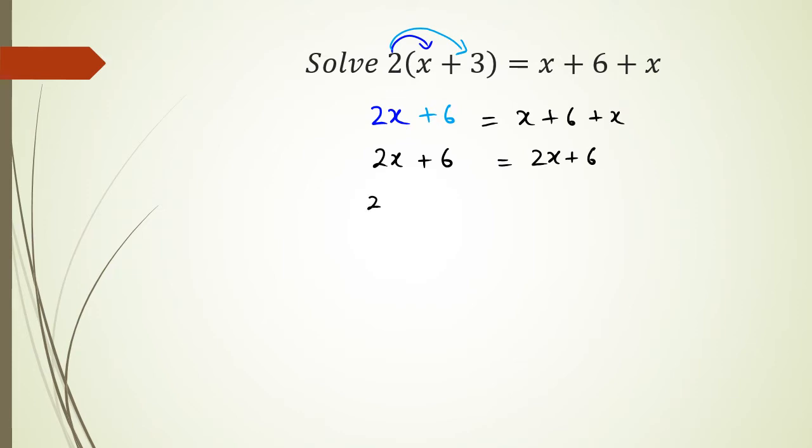So that means I have 2x plus 6 and shifting this 2x to the left hand side I'm going to get minus 2x. That equals 6 and 2x minus 2x is 0. So I have 0 plus 6 equals 6 and of course moving the positive 6 to the other side I'm going to get 6 minus 6 which means I'm getting 0 equals 0.